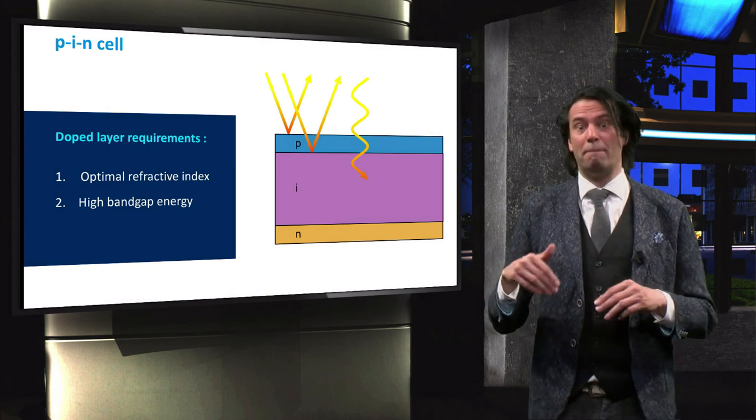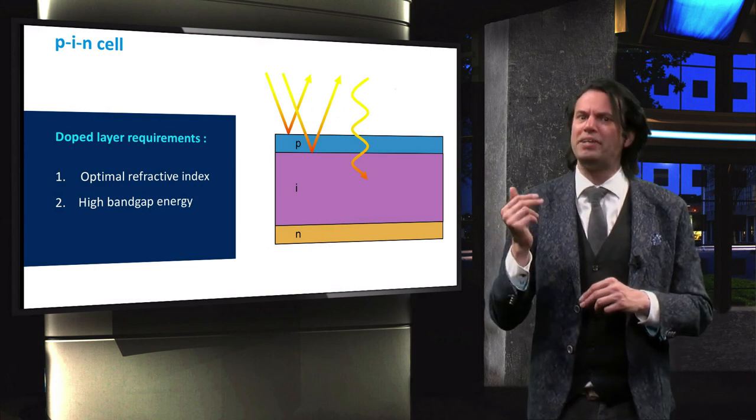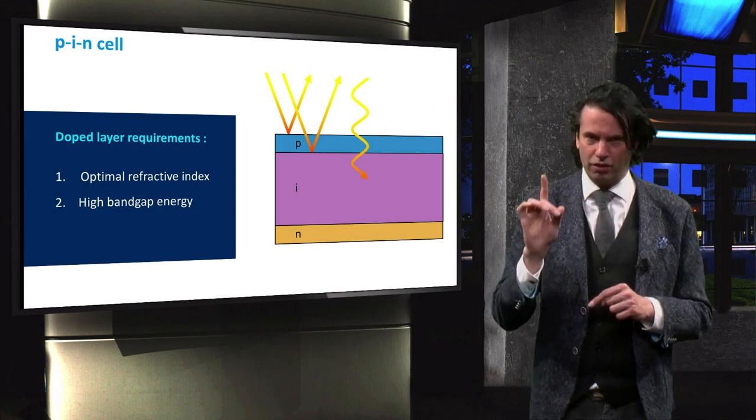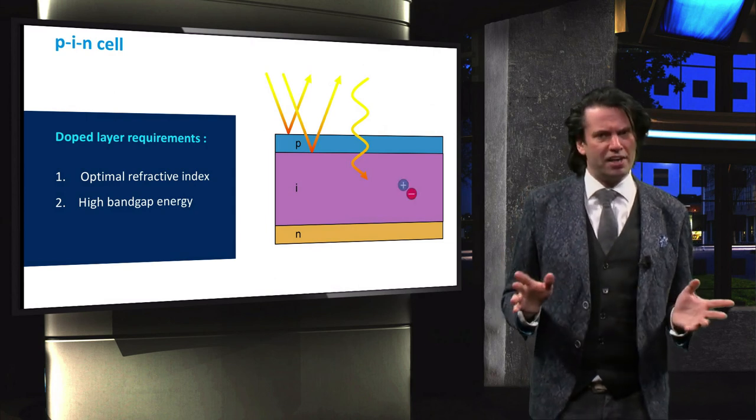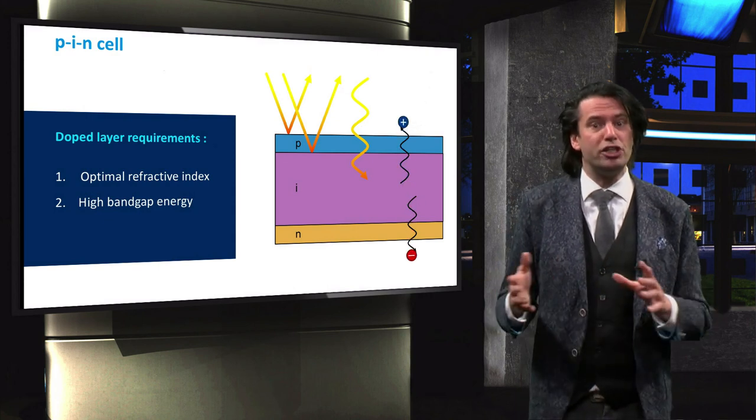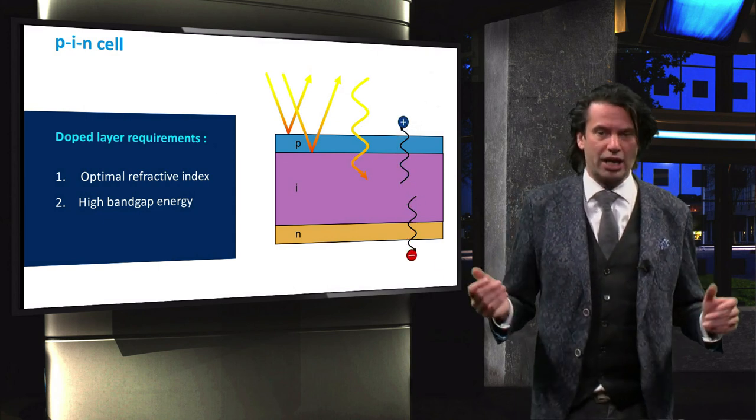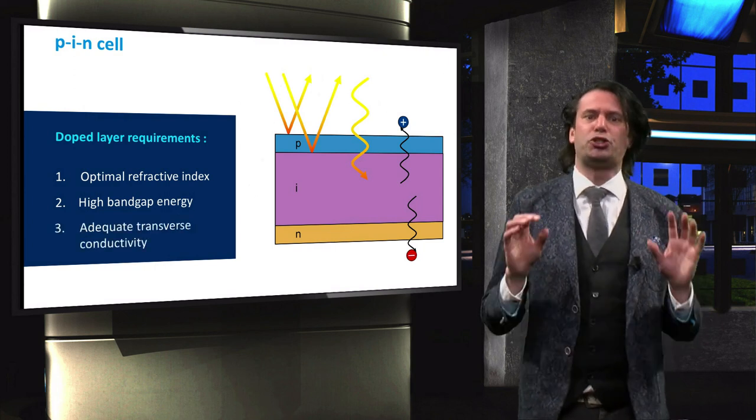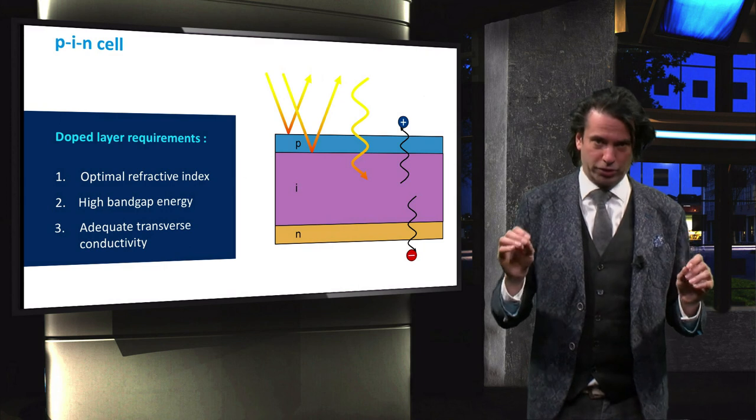Moreover, a high bandgap energy also benefits the built-in potential in the cell, which affects the cell voltage. Finally, the doped layer should be conductive enough for charge carriers to easily move through the material to the electrodes. In other words, the doped layer should have adequate transverse conductivity.